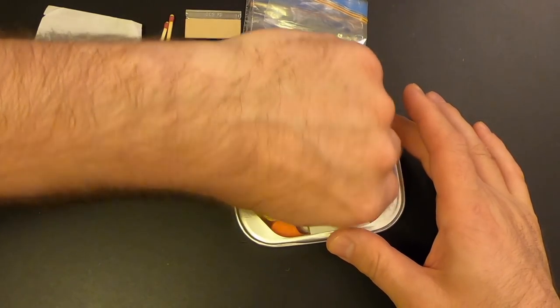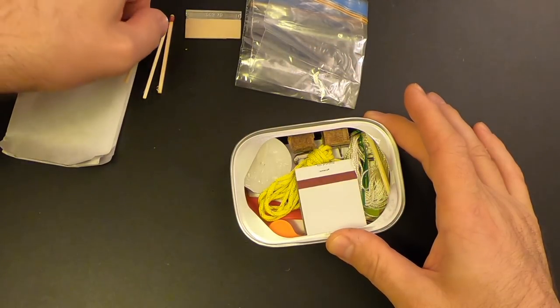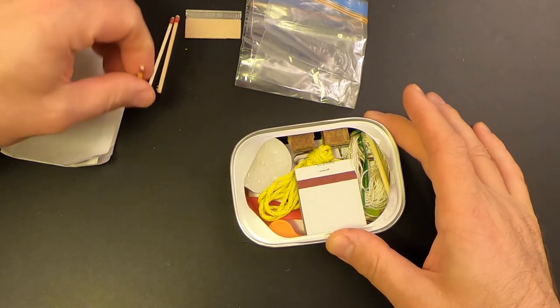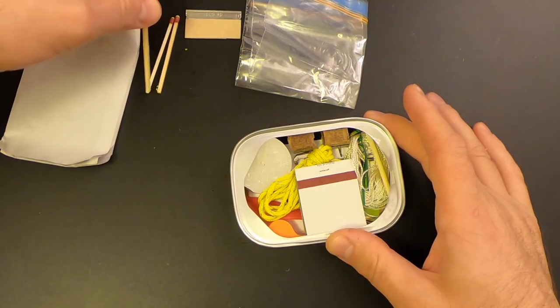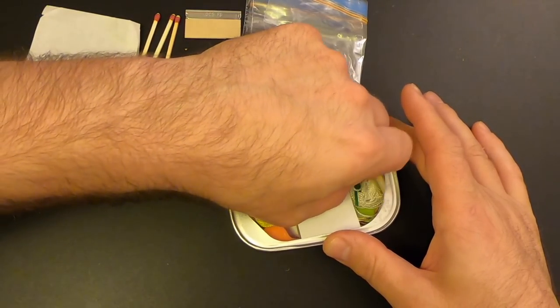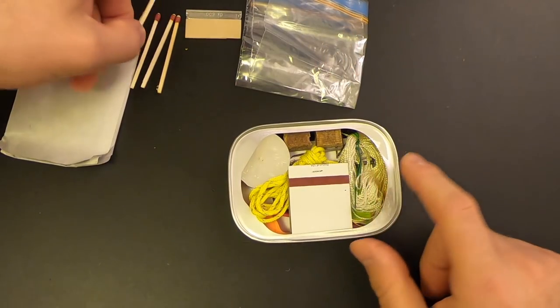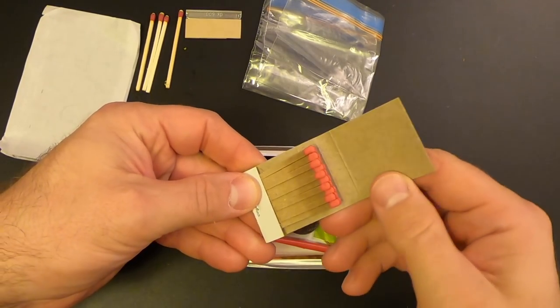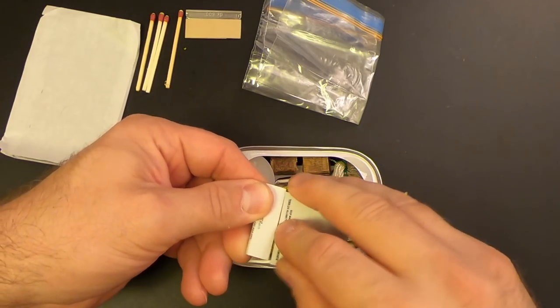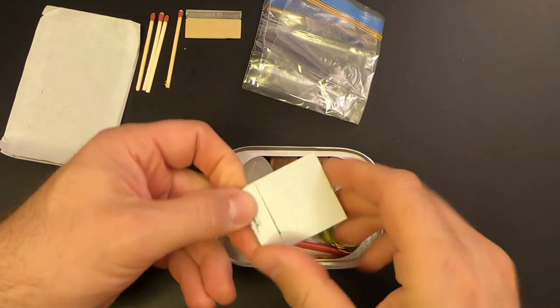So I've got another match. There's another match. Looks like these are strike anywhere matches. I believe there's four matches total. Yeah. Here's the fourth one. And we've got a book of matches. So there's some nice redundancy in terms of the fire making abilities.